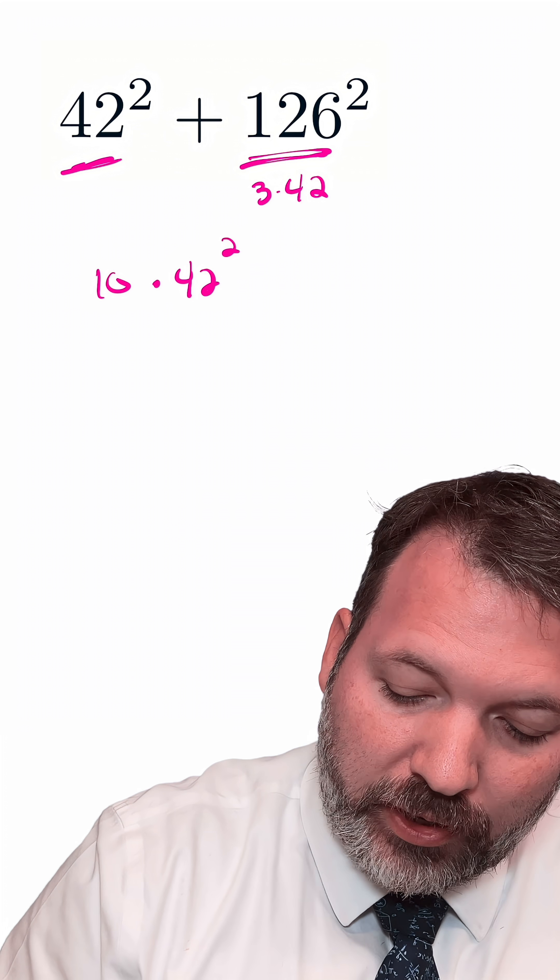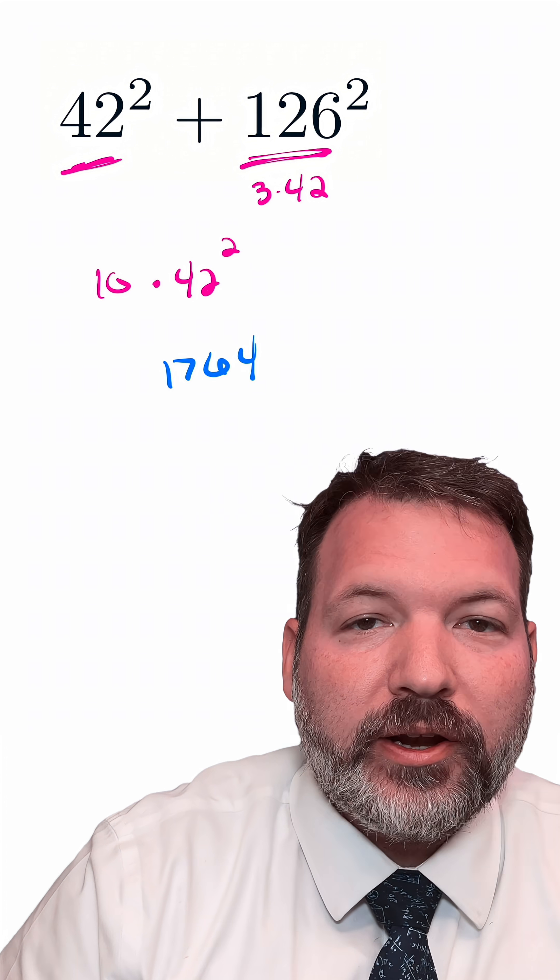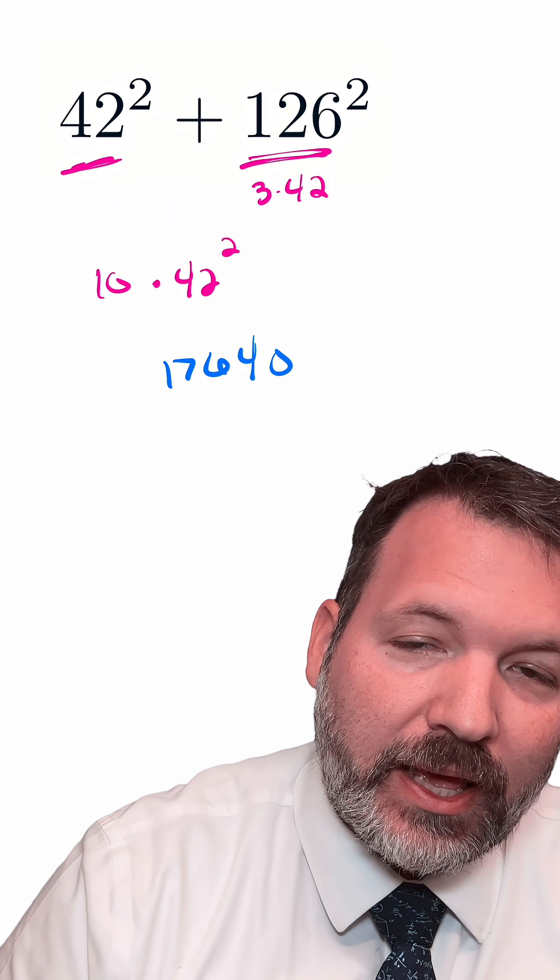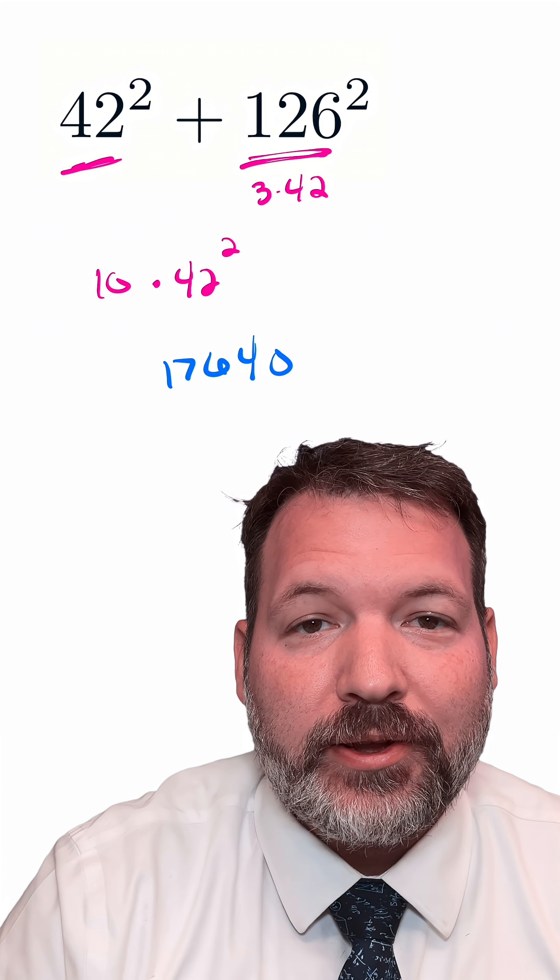You would still have to have a decent trick for how to compute 42² in your head, but if you know that that's 1,764, 10 times that is obviously just 17,640.